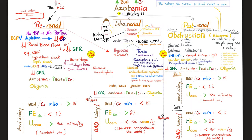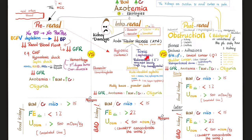Regardless of the cause of pre-renal azotemia, GFR decreases, causing azotemia and oliguria. However, the kidney itself is still fine — it's the renal artery that's failing to deliver enough blood. So it's still a good kidney: BUN-to-creatinine ratio is greater than 15, FENa is less than 1%, and urine osmolality is higher than 500. But if this is not treated early, pre-renal azotemia will convert to intrarenal azotemia.